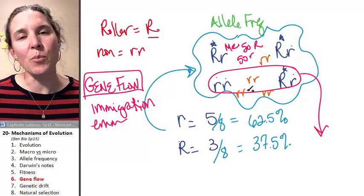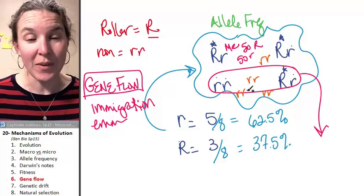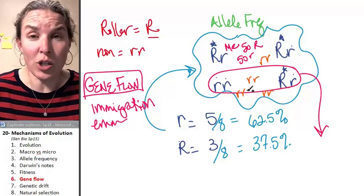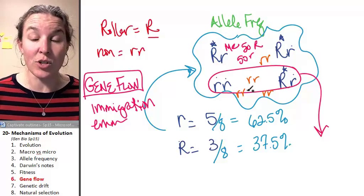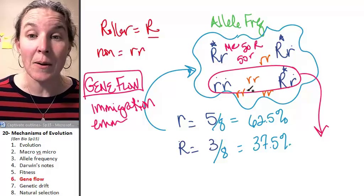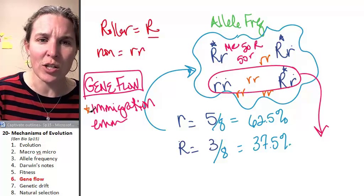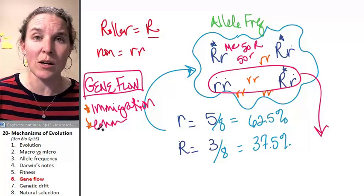My gene pool totally changed. That's really fuel for evolution. That can cause evolutionary change or speciation. But it's random and it's caused by immigration or emigration—people coming in or people leaving.